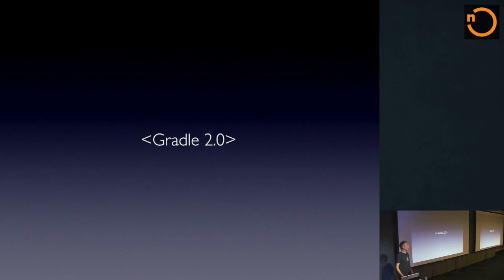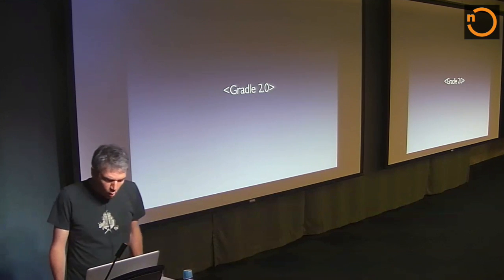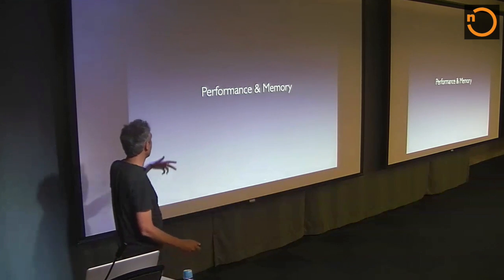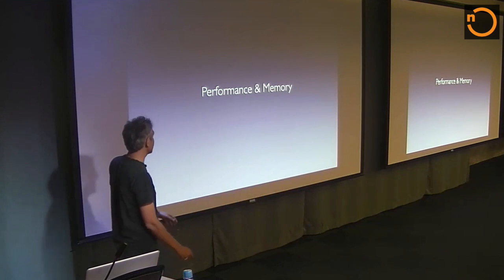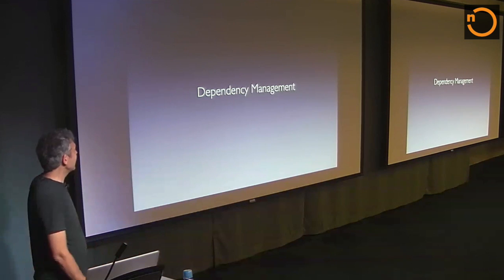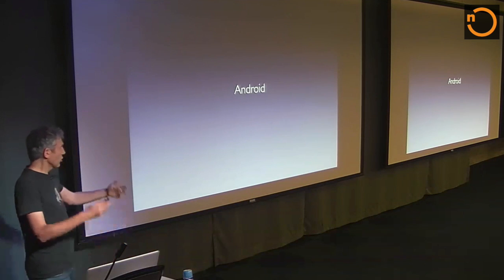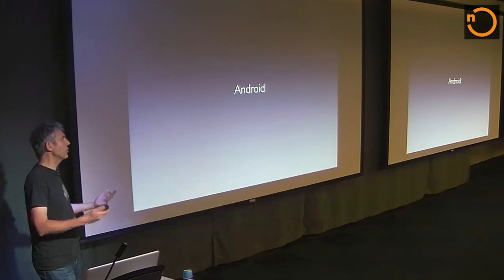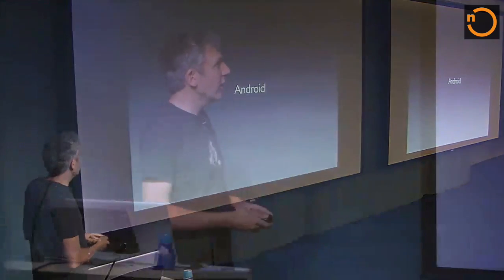We are about to release Gradle 2.0 — the release candidate is out. Gradle 2.0 is a maturity release. We did tremendous work on improving many aspects of performance and memory consumption. We worked a lot on making Gradle the best dependency management system out there. As most of you probably know, last year at Google I/O it was announced that Gradle is going to become the new official build system for Android, and we did a lot of work together with the Android folks, especially for the Android Studio integration to improve the user experience.